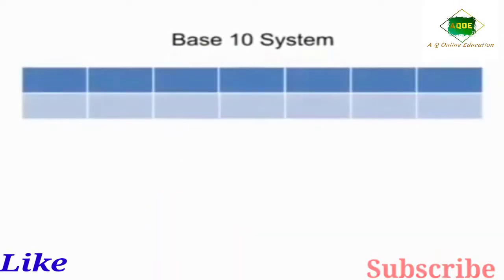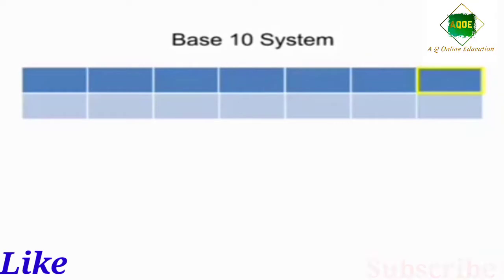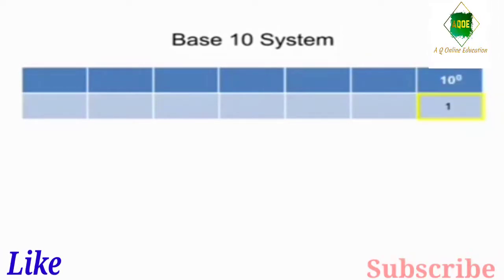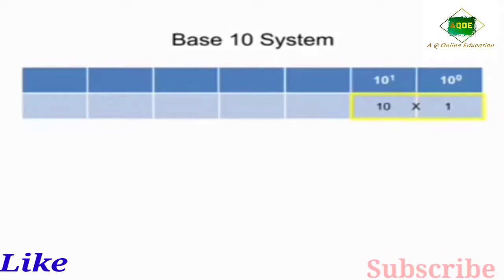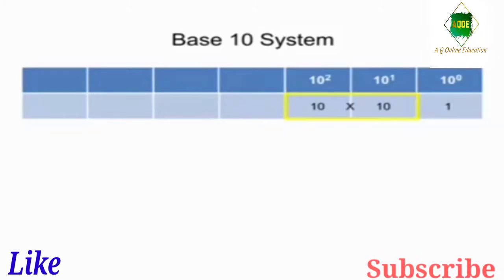Therefore, starting from the right, the first digit position is 1. The second digit position is 10 times the first, or 10. The third digit position is 10 times the second, or 100, and so on.